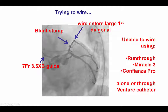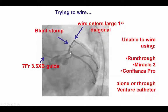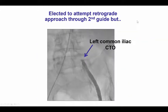We tried to wire through the LAD CTO antegrade. We used a 7 French guide, which is acceptable even today, and then tried to cross with the equipment available at the time — Workhorse wires, the Miracle-T, and the Confianza Pro 12 — advanced either alone or through the Venture microcatheter, trying to point them toward what we thought was the proximal cap. Today, with a dual injection, it would be much more accurate about where the wires should be directed. Unfortunately, this was unsuccessful.